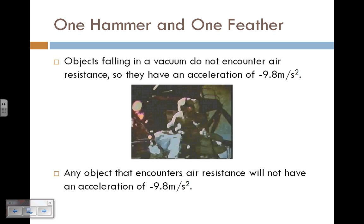The intuitive answer is that they won't land together because the feather will get held up—and that's true on Earth, where the feather encounters air resistance. But in a vacuum like the moon, where there is no air, these two objects should hit at the same time if Galileo is correct. The acceleration should be negative 9.8 meters per second squared for both objects. Let's go ahead and watch this video.